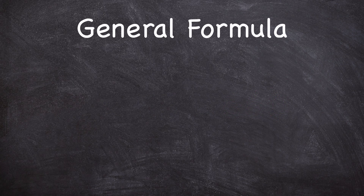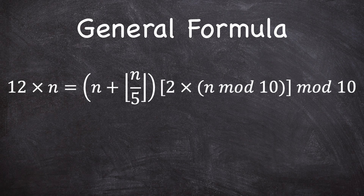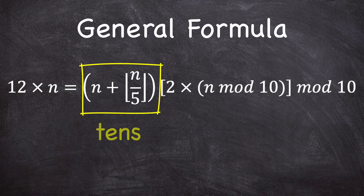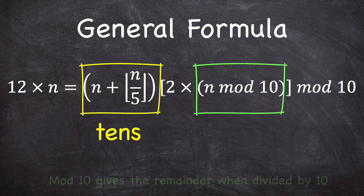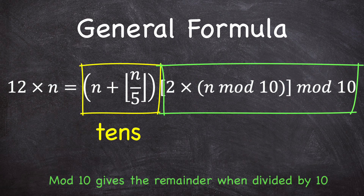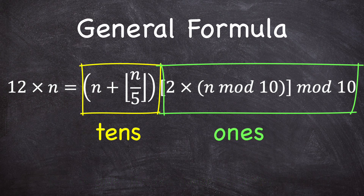Let me show you a general formula for finding the product of 12 with any positive integer n using this pattern. The formula says to take the n value and add the floor value of n divided by 5 — which just means round your answer down to the nearest whole number — and this gives the number of tens in the product. Next, do n mod 10 to get its ones digit, then multiply that by 2, and do that value mod 10 to get its ones digit. This gives the ones digit of the product.